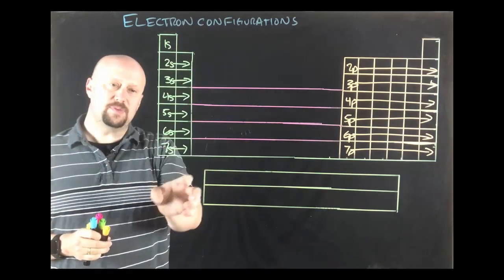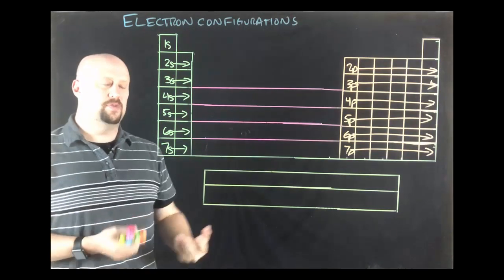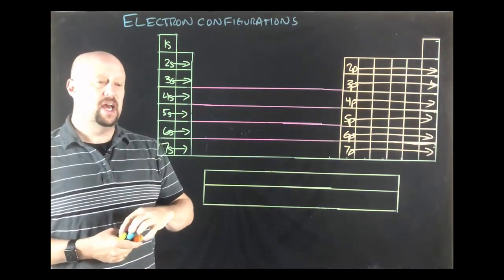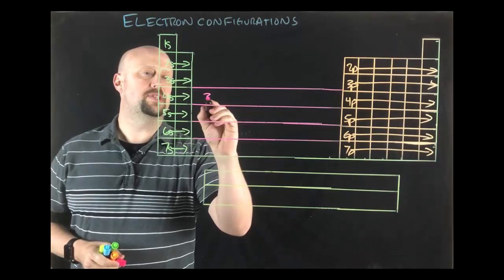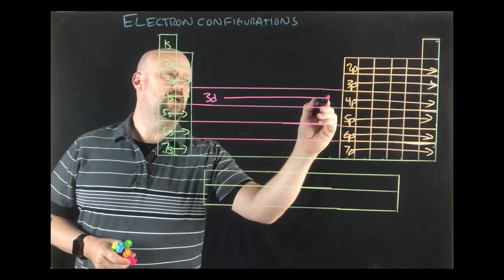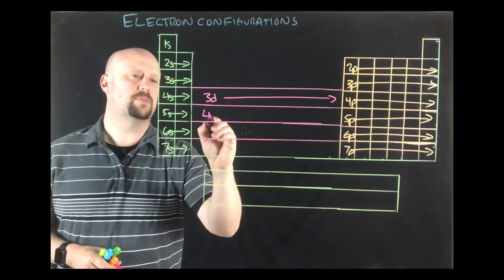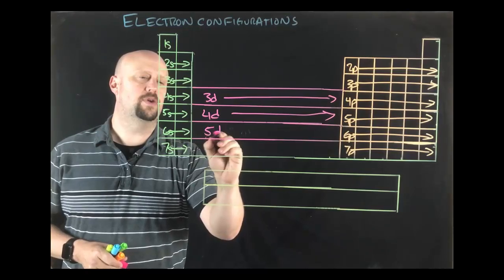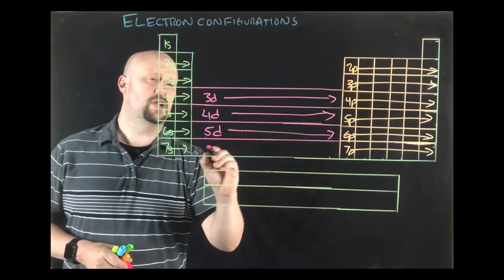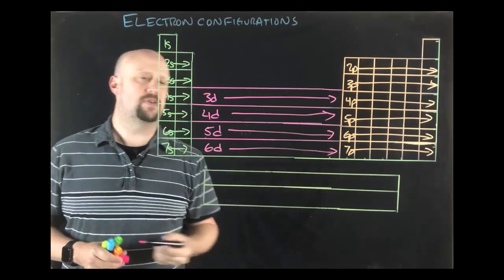So we've got the S block of the periodic table. We have the P block of the periodic table. And you can sort of already, from knowing what you know from the last video, figure out that there's a D and an F block as well. And so in this region is the 3D. And you'll notice I didn't draw all the individual elements there. I didn't really feel like that was particularly necessary at this point because you've got a periodic table in front of you that you're going to use to follow along as we start to do the actual electron configurations.